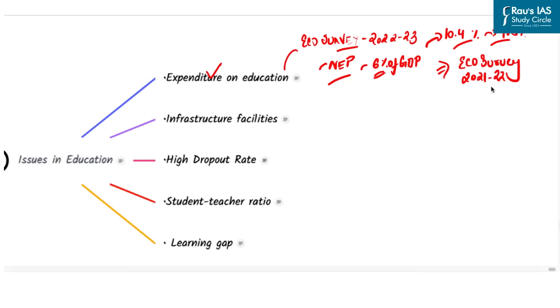As per economic survey 2021-22, expenditure on education as a percentage of GDP was 2.8% between 2019-20, 3.1% between 2020-21, and 3.1% between 2021-22. With this you can make out that India's education budget has never touched the 6% of GDP number.